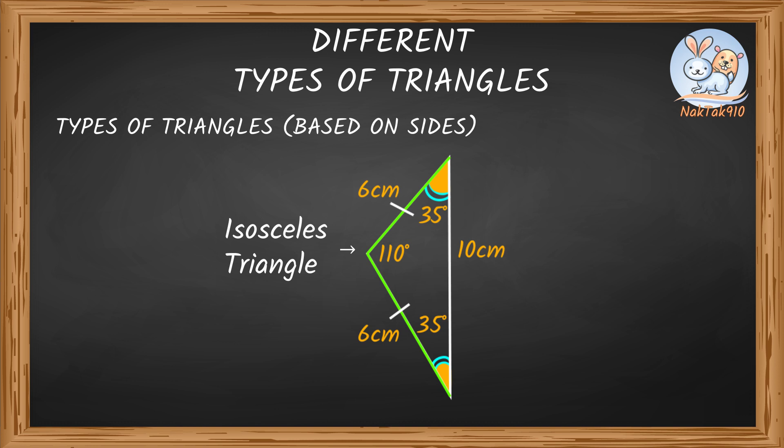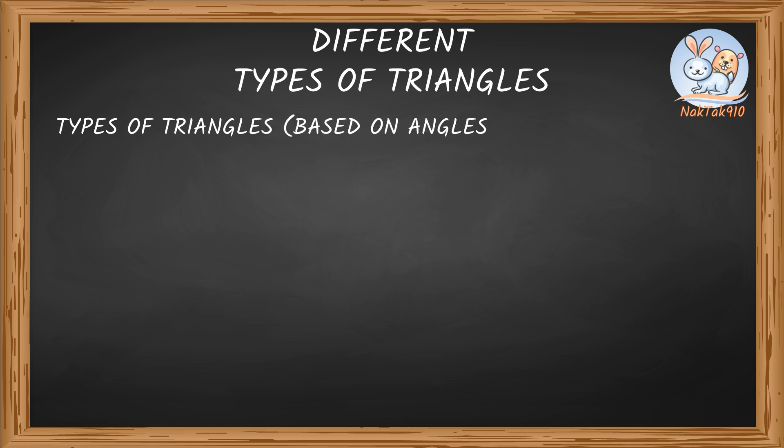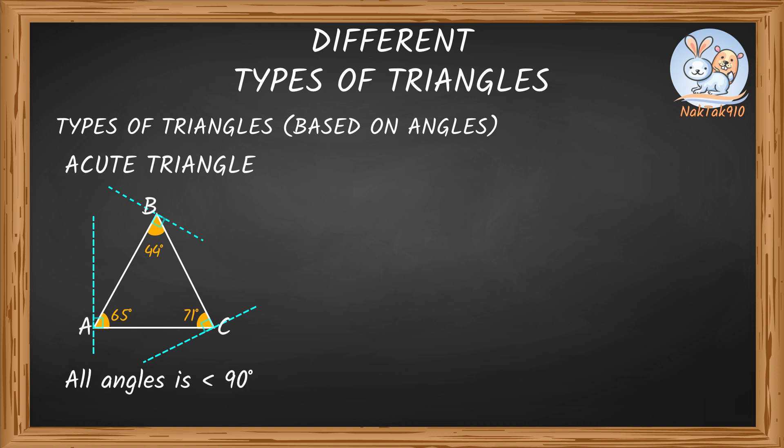Now that we learned triangle based on sides, let's see different triangles based on angles. Do you remember an acute angle? Yeah, an angle measuring less than 90 degrees is called an acute angle. Right! So if a triangle has all the angles less than 90 degrees, meaning each angle is an acute angle, then it's called an acute triangle. In this triangle ABC, each of its angles is less than 90 degrees. So this is an acute angle triangle.